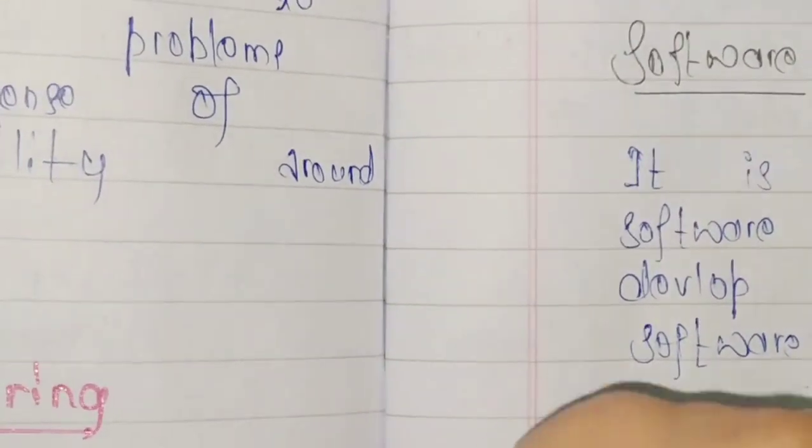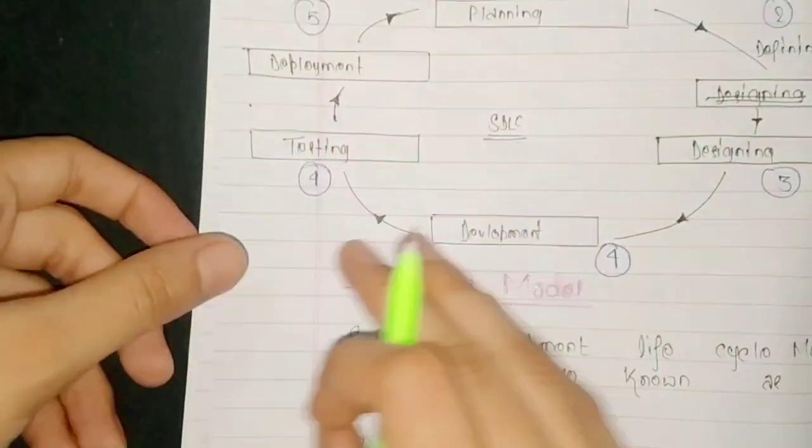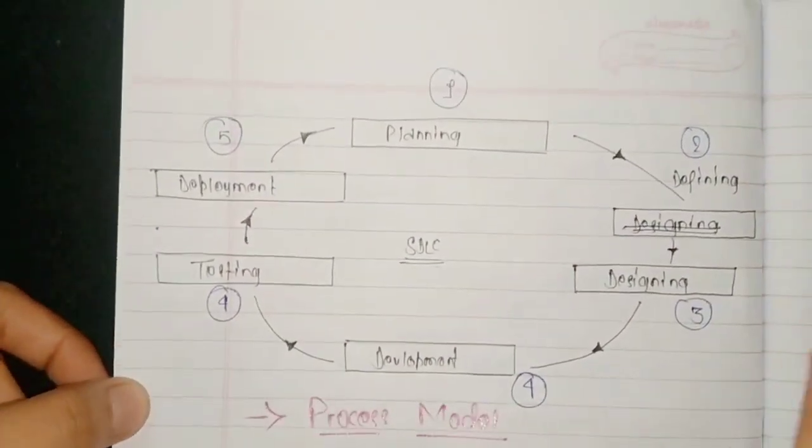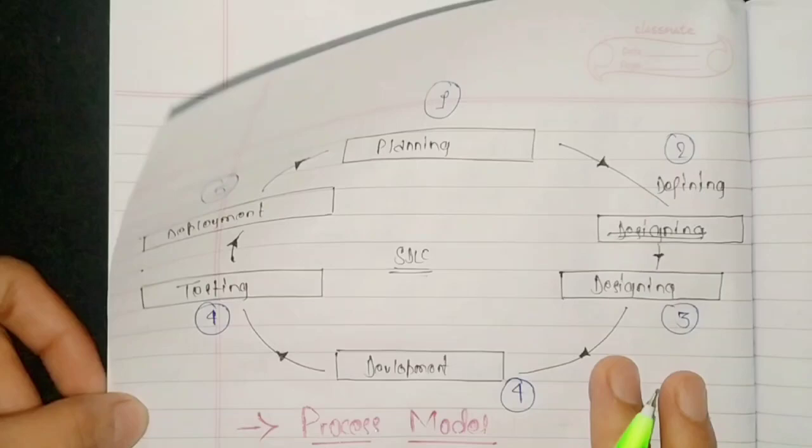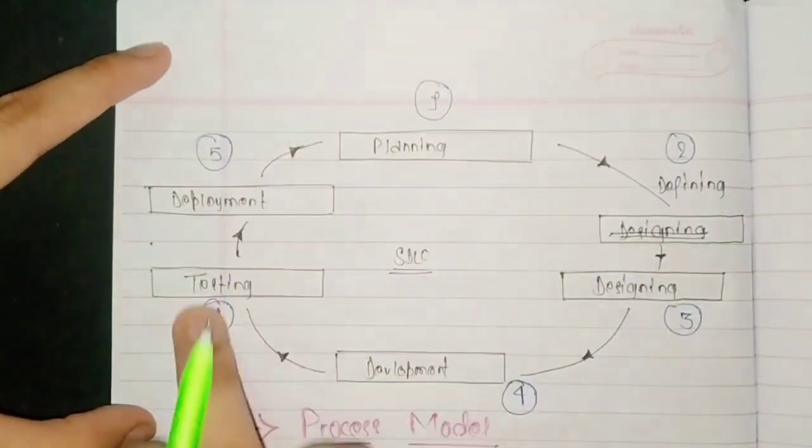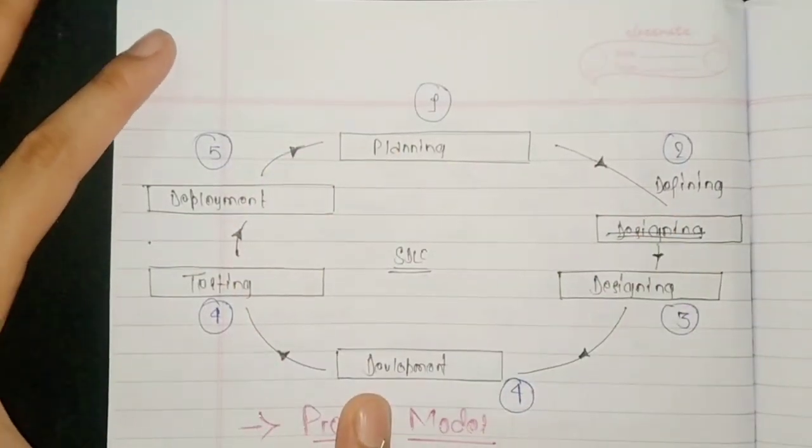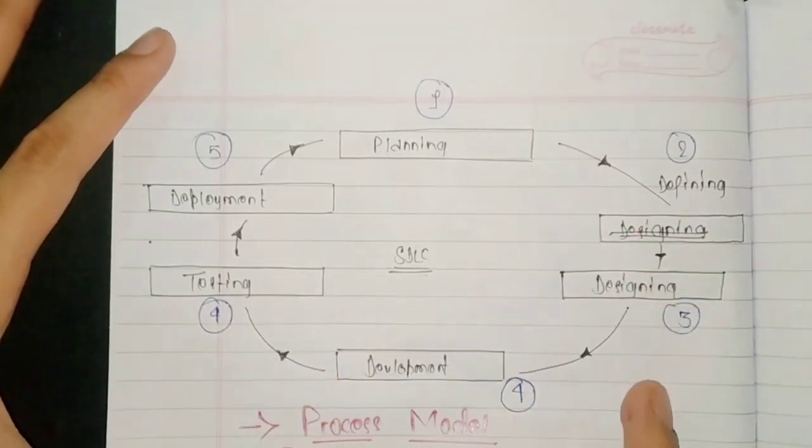So now we approach this diagram, which is the software development life cycle, which is basically focused on which things we focus on. So software development life cycle is the basic fundamental diagram which we can use in every process model.